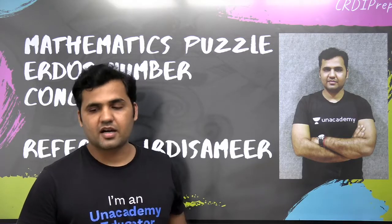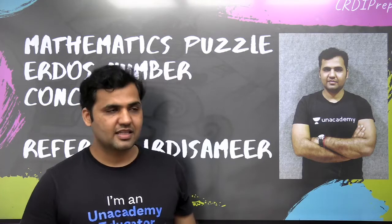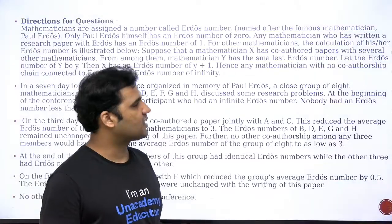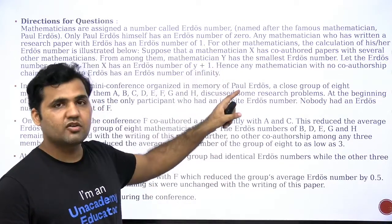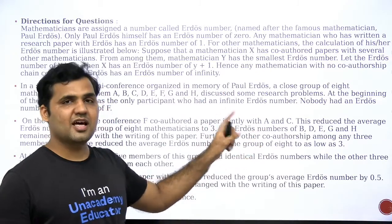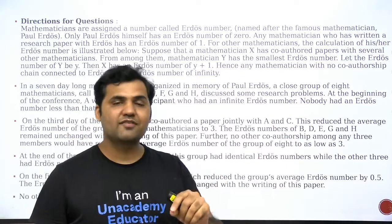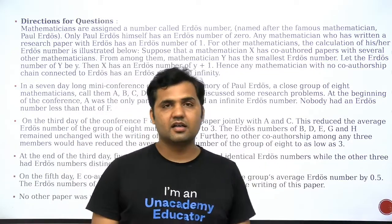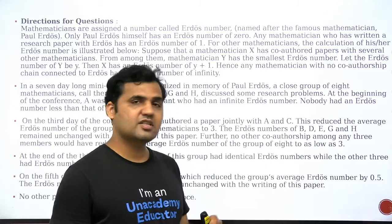This is the second part of this Mathematics Puzzle that we will see in this video. In the first part, we discussed this complete concept of this puzzle — what is the meaning of Erdos number, how the Erdos number gets changed, and what will be the largest Erdos number at the end of the conference. You have to watch the previous video, which is in the list. You can just have a look at the first video to understand the set completely.